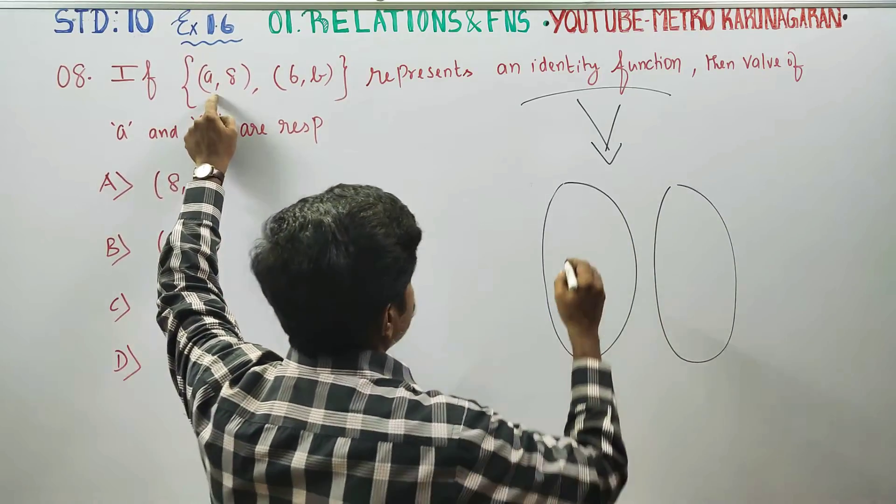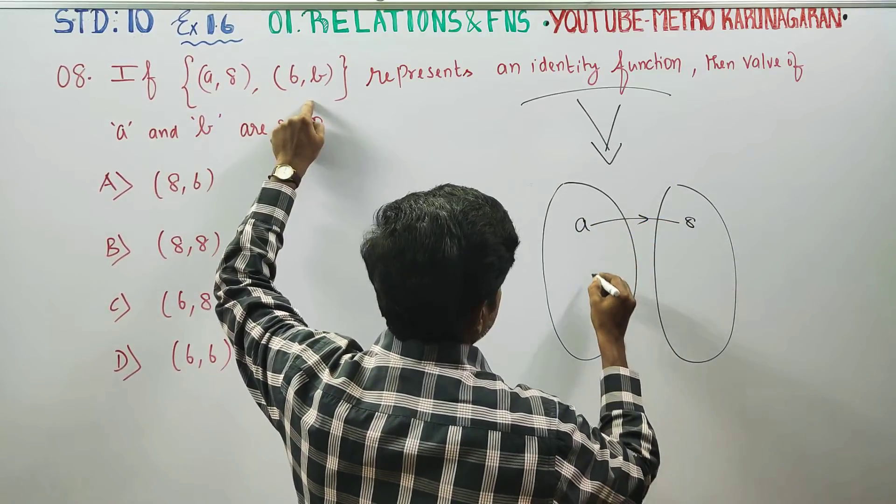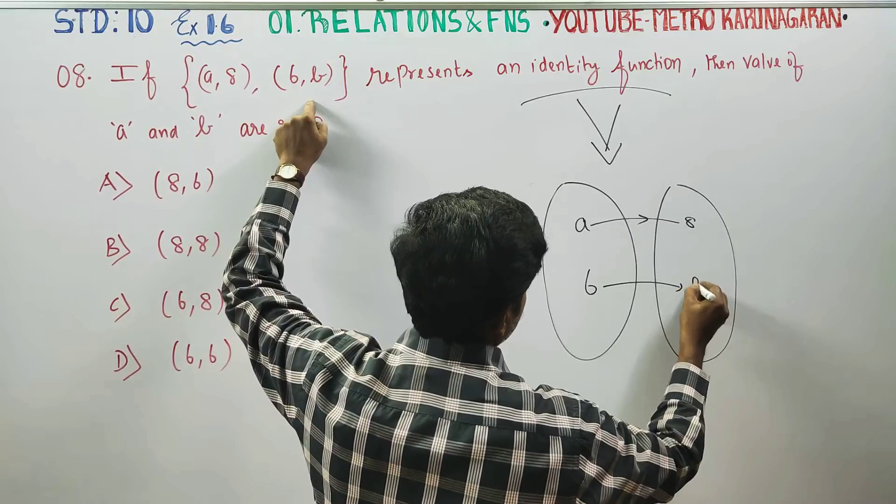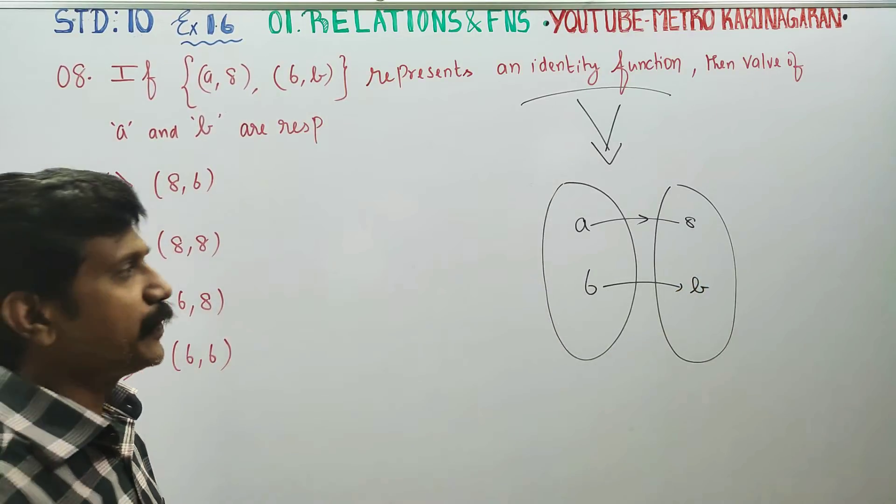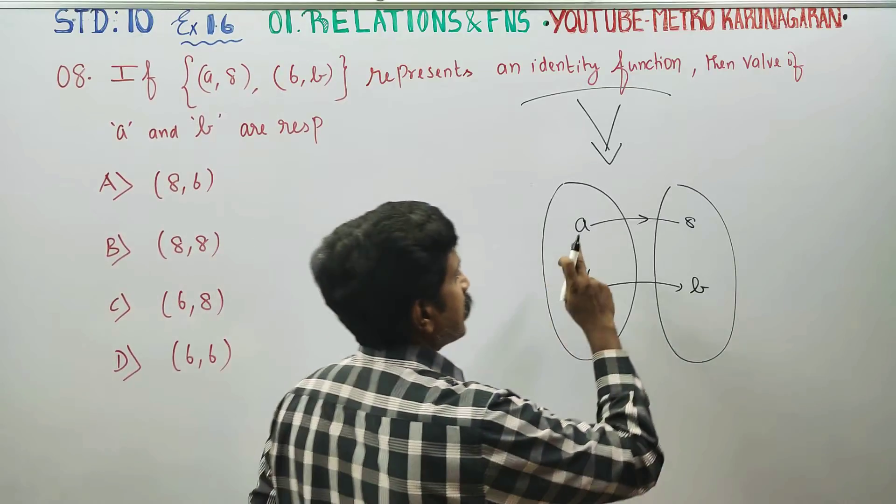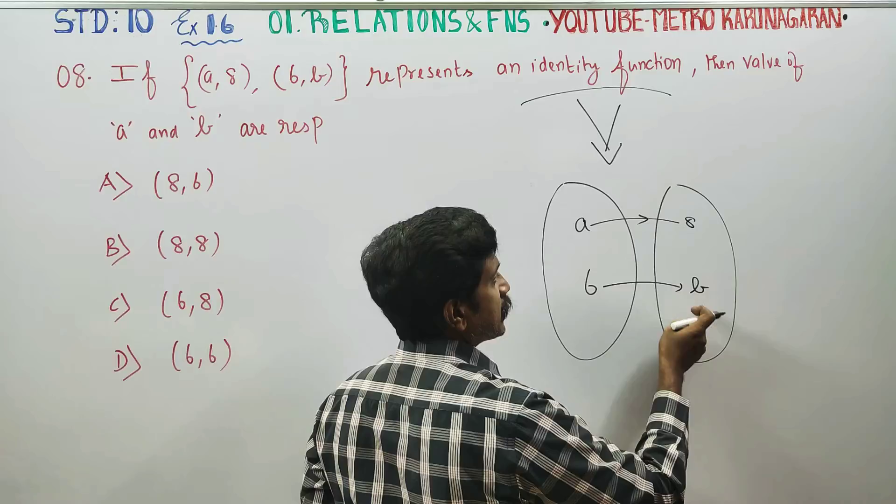In this sum, what it says is A is mapped to 8, similarly 6 is mapped to B. In this identity function, whatever element is there, that will be the image. Whatever element is there, that will be the image.